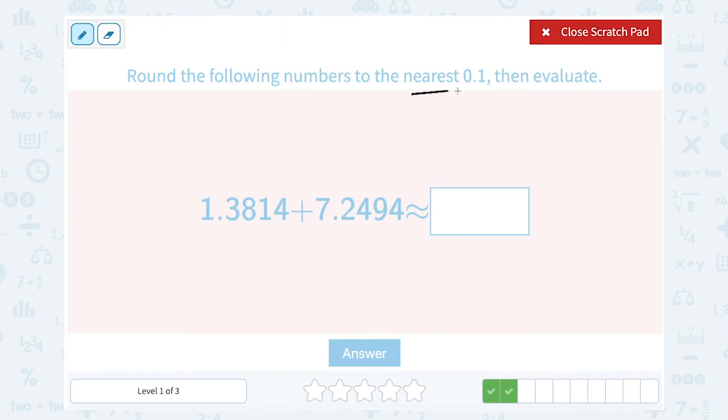Again, we're rounding to the nearest one-tenth and then evaluating. So this one was 1.38 and then it kept going from there. So 1 point. Now notice the number after the 3 is higher than 5. If it's 5 or higher, we round it up. So my 3 is going to round up to a 4. We're going to round that to 1.4.